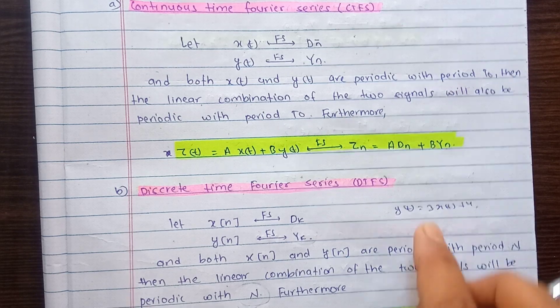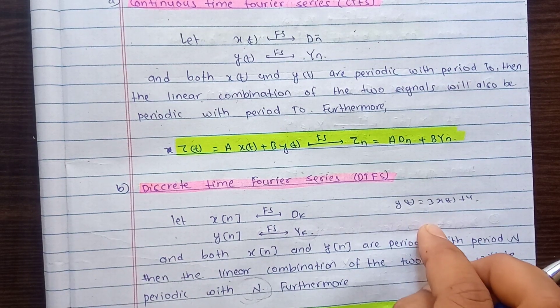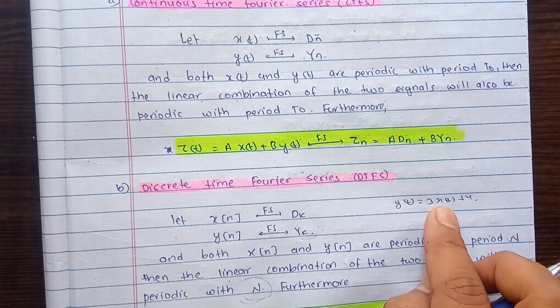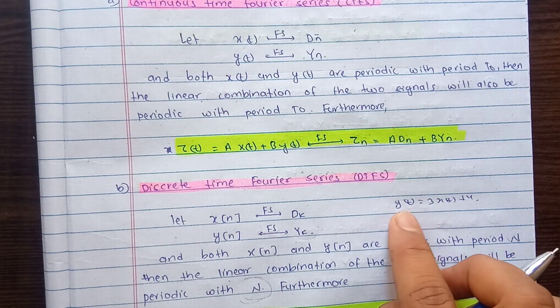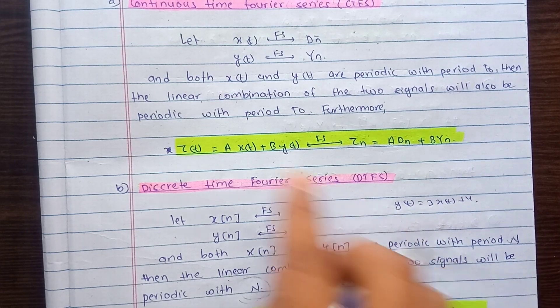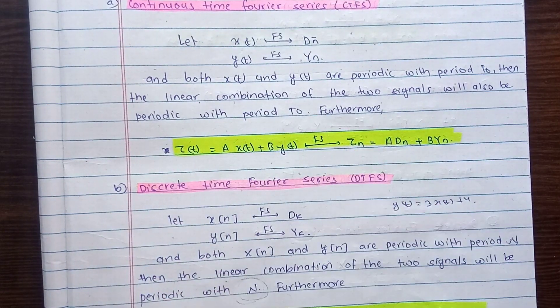So the linearity condition can be verified using signals X1t, X2t, Y1t, and Y2t as a linear combination. We can check whether the system is linear or not based on this.